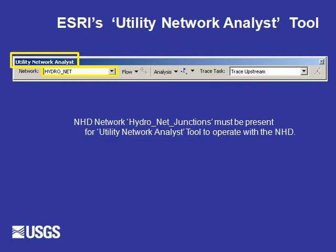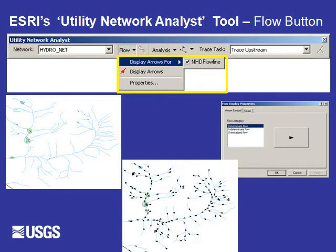I'm highlighting the HydroNet Junction feature class, which must be present for the Network Analyst tool to operate with the NHD. Going through the Utility Network Analyst tool, I'm dropping the drop-down menu from the Flow button. The first option is to display arrows for the flowline feature class. Selecting the second Display Arrows button will place an arrow indicating direction of flow on all features participating in the network. Selecting the Properties button opens the Flow Display Properties window, which allows a user to set symbology for determinant flow, indeterminate flow, or uninitialized flow.